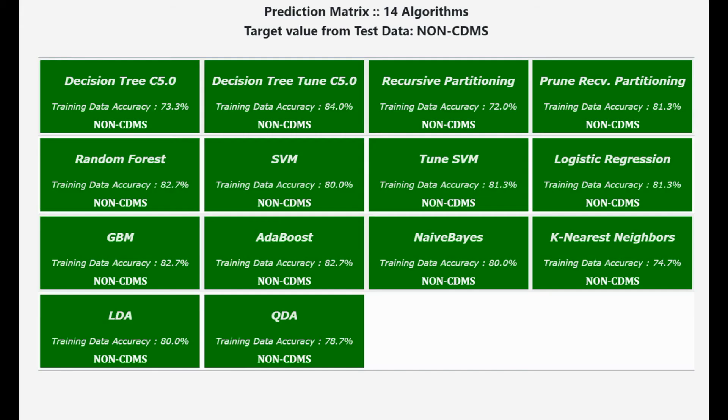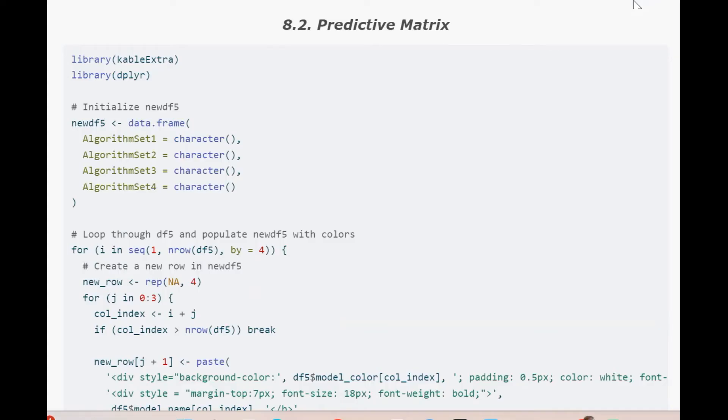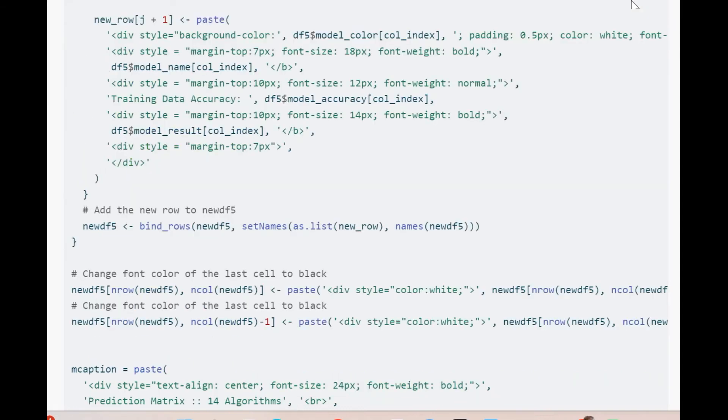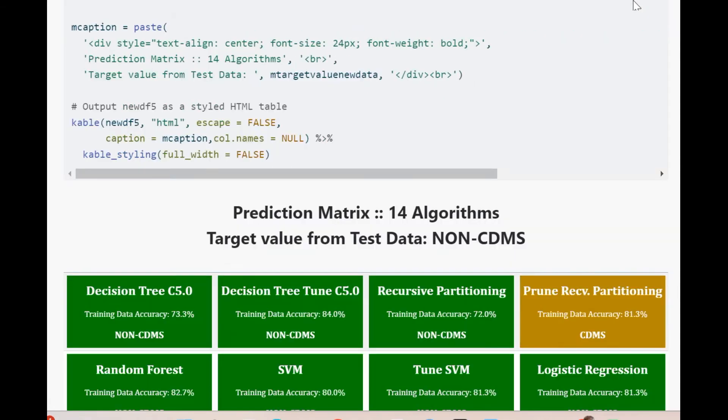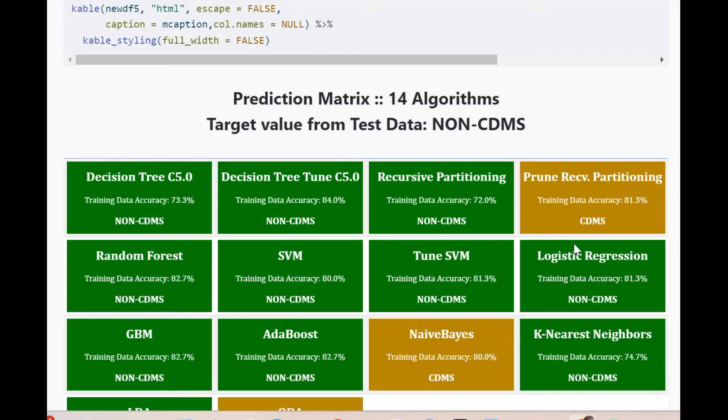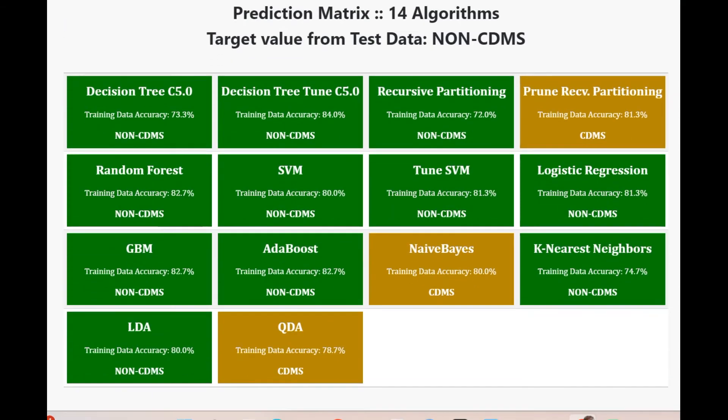Here is the beautiful prediction matrix for 14 algorithms. One of the rows in test data is used as new data to predict values for each one of the algorithms. Actual target value for the selected row in test data is provided along with the title. This colorful matrix is built using KBL function and HTML tags to configure background color and text font.